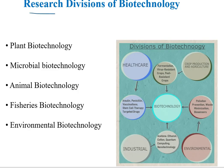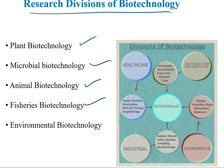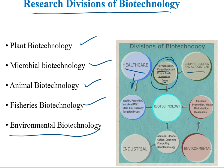The research dividends of biotechnology today cover plant biotechnology, microbial biotechnology, animal biotechnology, fisheries, and environmental biotechnology including healthcare. This includes fermentation, virus-resistant crops, pest-resistant crops, and agricultural production. In healthcare: insulin, penicillin, various vaccinations, stem cell therapy, and drug targeting. In environmental biotech: pollution control, waste minimization, and biosensors. In industrial biotech: ethanol, acetone, cotton, and quantum computing.